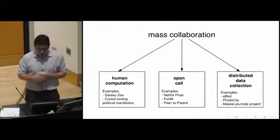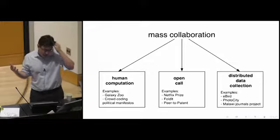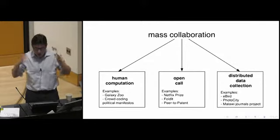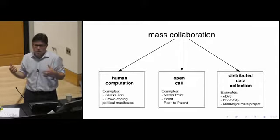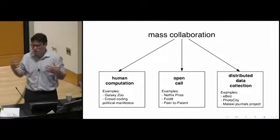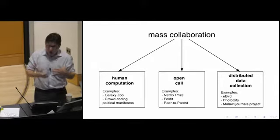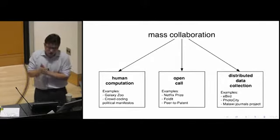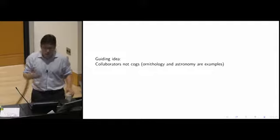Those are three broad buckets. I like to split them up based on how a researcher would think. If a researcher thinks, oh, I wish I had a bunch of undergrad RAs, that is a clue that you might have a human computation problem. If you think, I need to talk to the smartest person in the world, but I don't know who that person is, that's the kind of thing where you might have an open call problem. And if you think, I need to go out into the world and collect a bunch of new data, that's when you might have a distributed data collection problem.